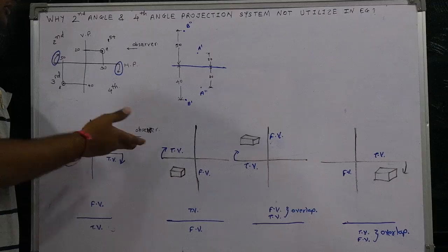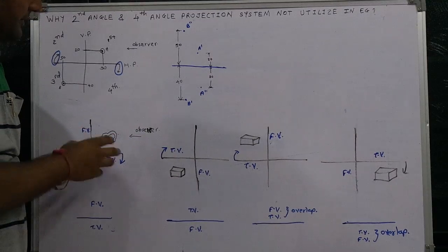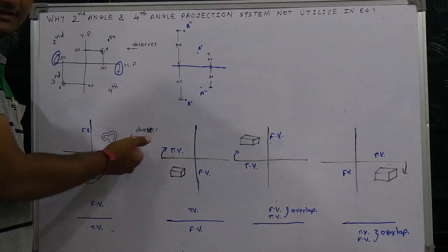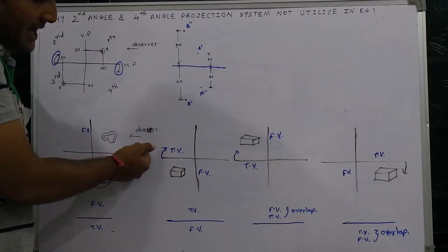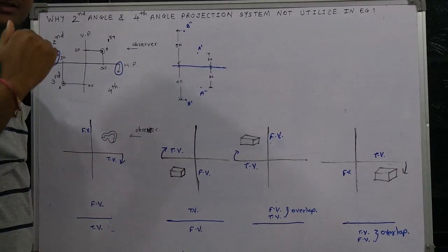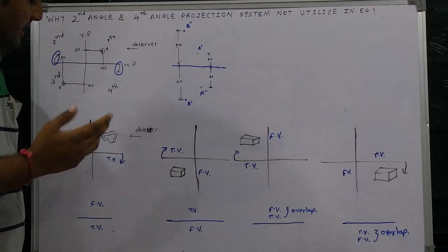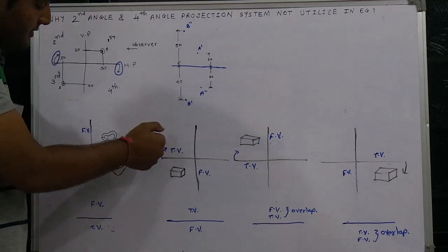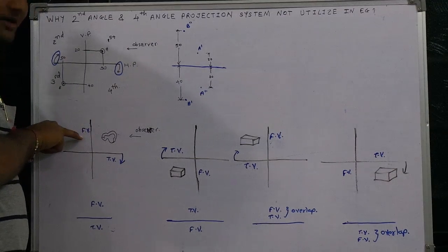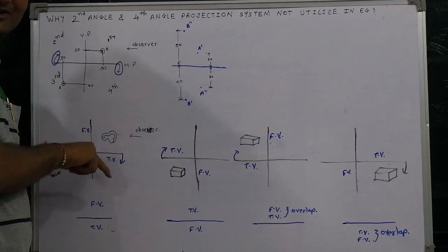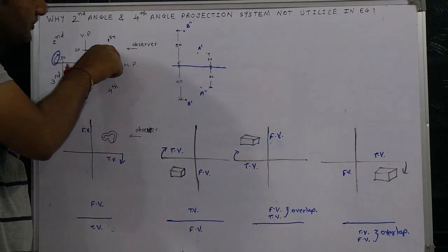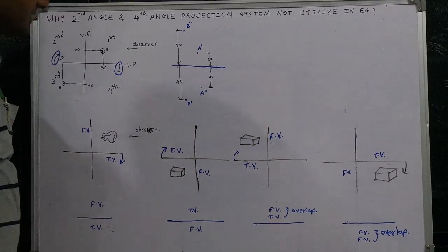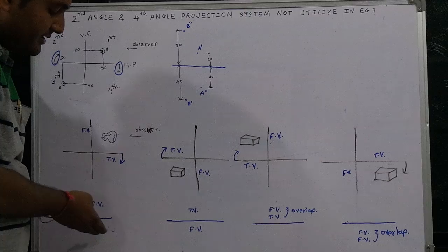Now let's come to the projection of elements. I am taking four cases with four answers. In the first element, the observer is looking from one fixed side — observer direction and horizontal plane rotation are fixed assumptions in engineering graphics. The element is placed in the first quadrant. The front view is drawn on the vertical plane, and the top view is drawn on the horizontal plane. Rotating the horizontal plane downward means the top view is drawn at the bottom side of the reference line, and the front view is at the topward side.